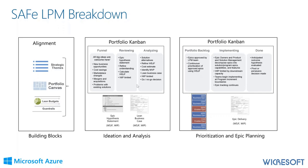We actually begin calculating Weighted Shortest Job First as early as the reviewing stage, and we continue to use it through our portfolio backlog. The rest of the phases is really about implementing: we take the epic that is approved and prioritized and send it to our epic owners and teams to begin deconstructing that epic into its features and the increments in which they're going to be delivered.